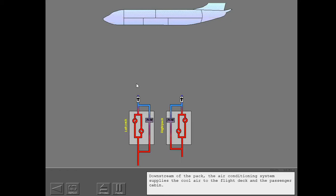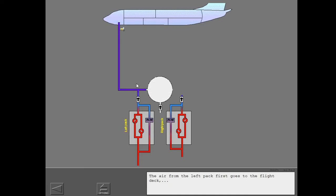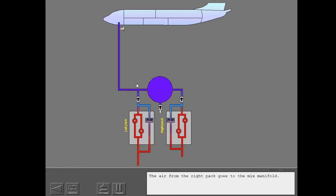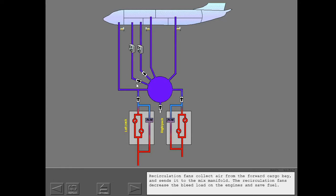Downstream of the pack, the air conditioning system supplies the cool air to the flight deck and the passenger cabin. The air from the left pack first goes to the flight deck and the rest goes to the mix manifold. The air from the right pack goes to the mix manifold. From the mix manifold, the air goes to the forward passenger cabin and the aft passenger cabin. Recirculation fans collect air from the forward cargo bay and send it to the mix manifold, which decreases the bleed load on the engines and saves fuel.